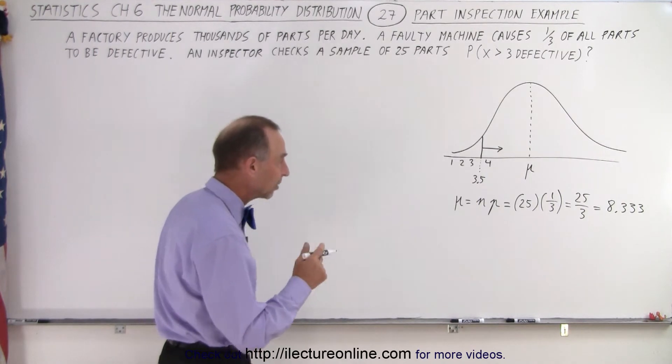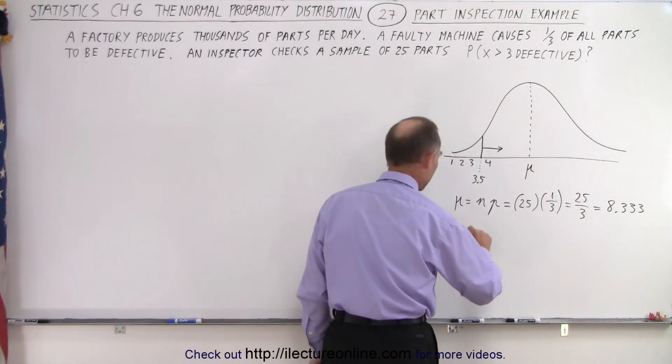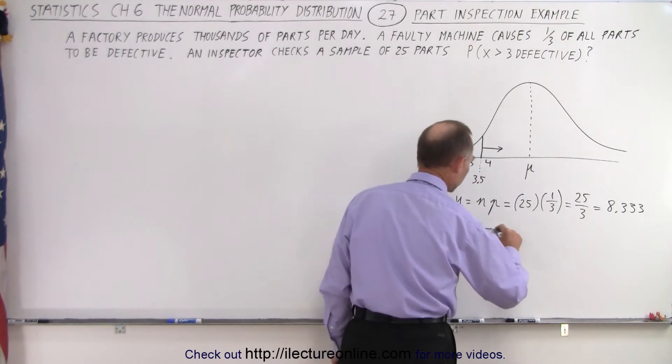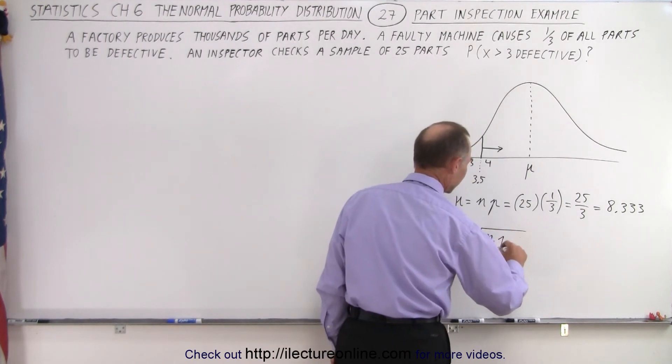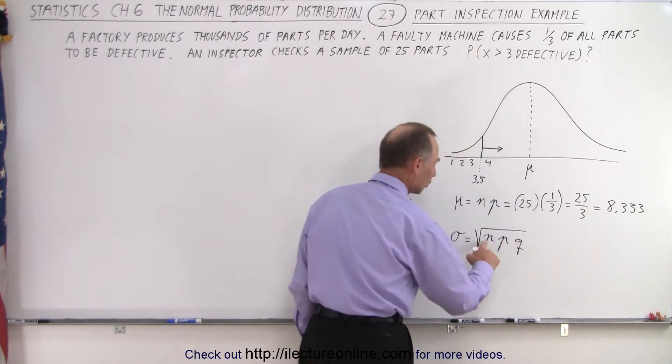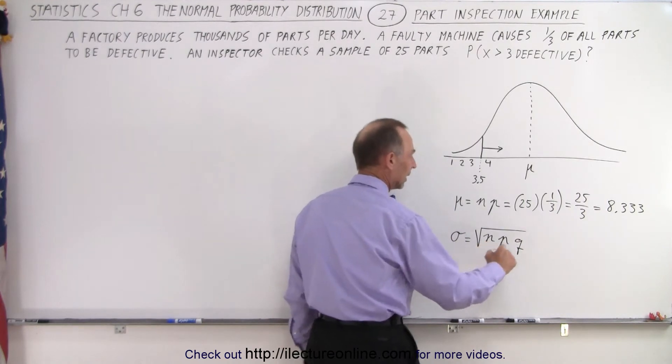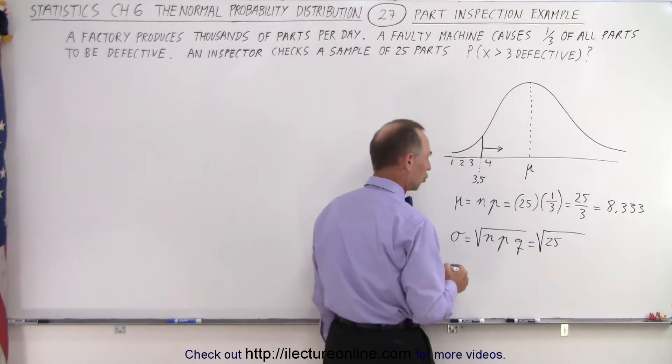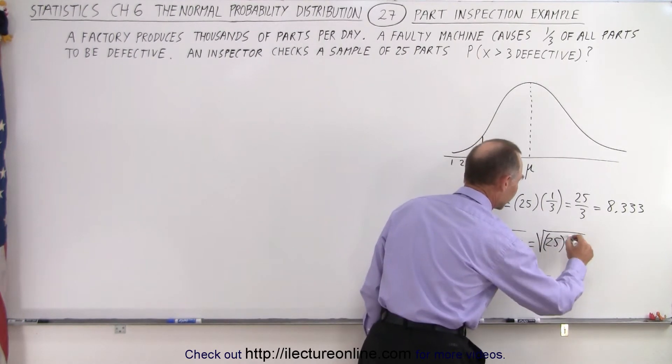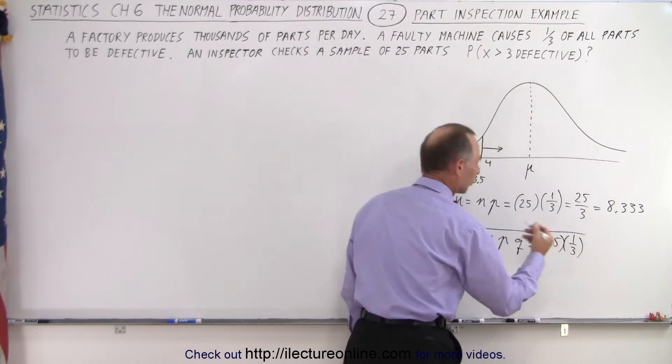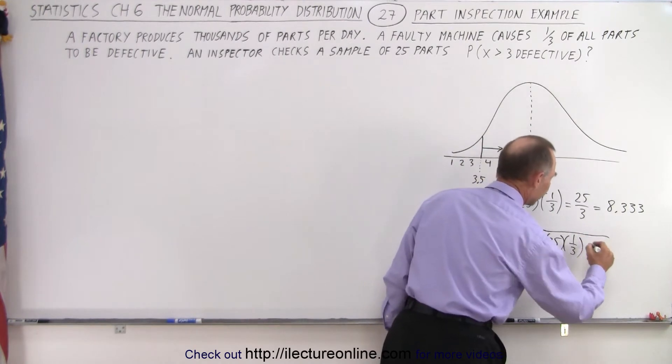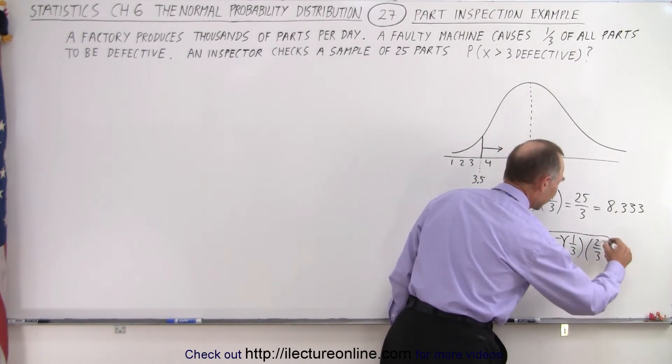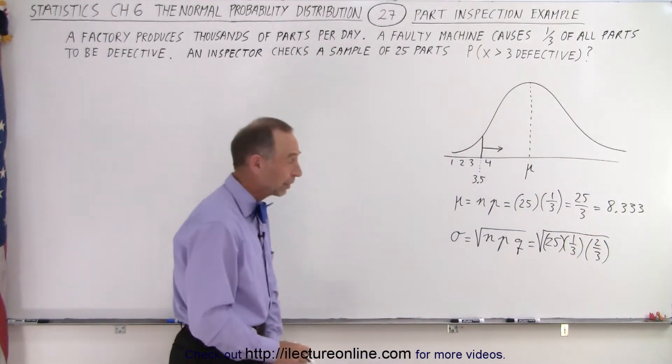Now we need to find the standard deviation. Now the standard deviation can be found to be the square root of n times p times q. So n again, that would be the number of parts chosen. The probability of success would be one-third. One-third would be defective. And the probability of picking a non-defective part is then two-thirds, the probability of failure.